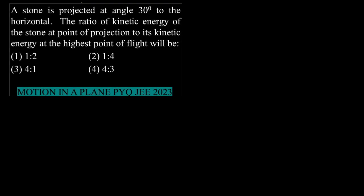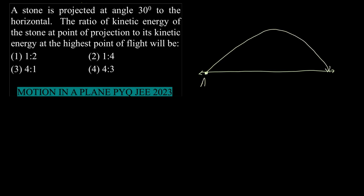Let us try to do this question in a slow and controlled manner, and understand the concepts in detail. We have point A, which is the point of projection, and point B, which is the highest point — the topmost point of flight.